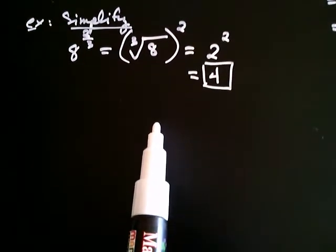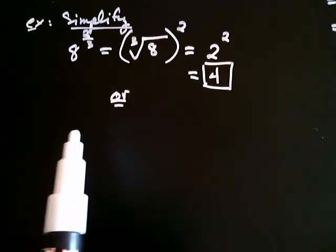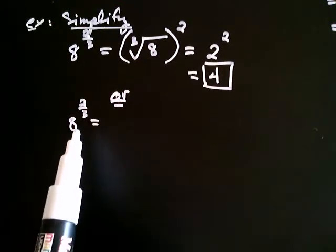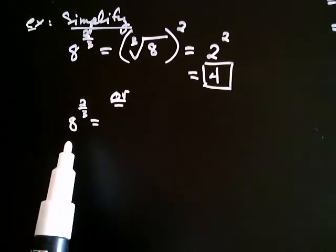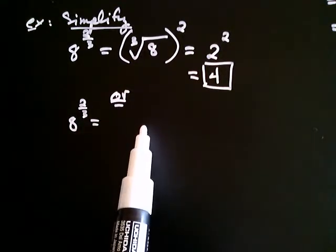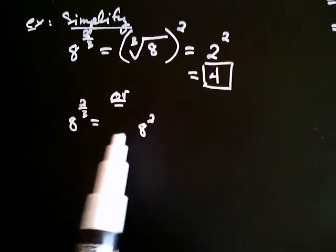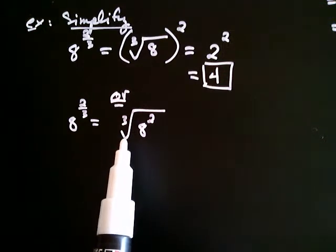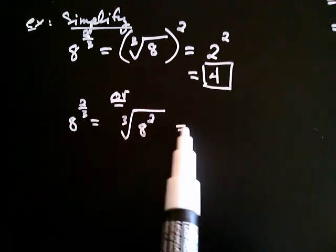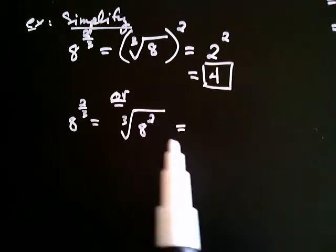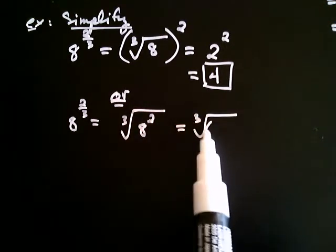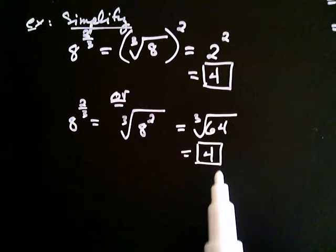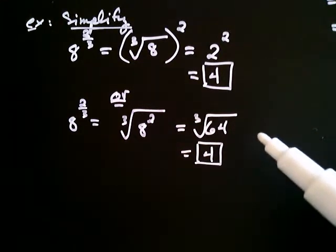You may want to do this another way — and this is equivalent. You could take 8 to the 2 thirds and deal with the numerator first: take 8 and square it first, then take the cube root. 8 squared is 64, and the cube root of 64 is 4. Notice how you got the same answer — that's because of our definition. You can do it either way and you'll get the right answer.